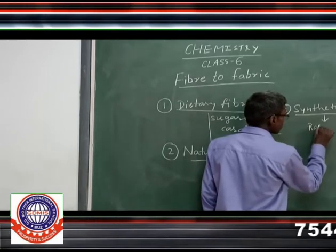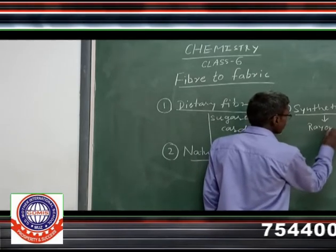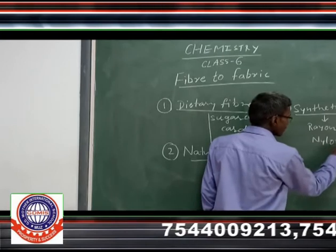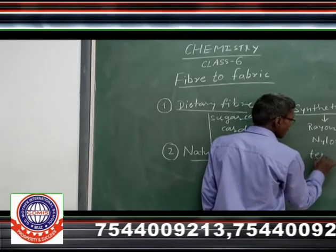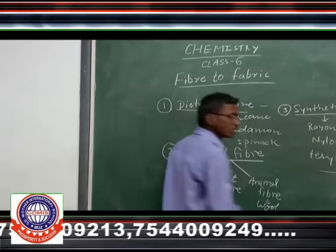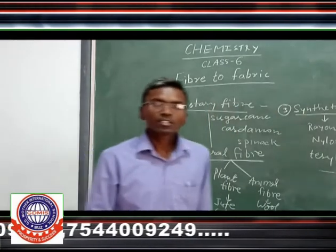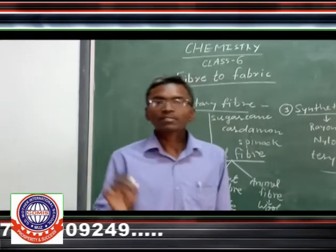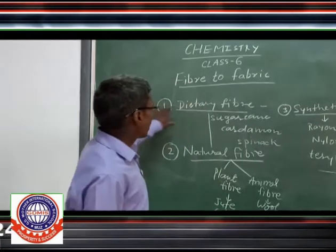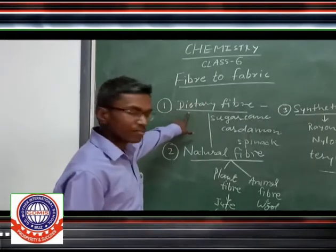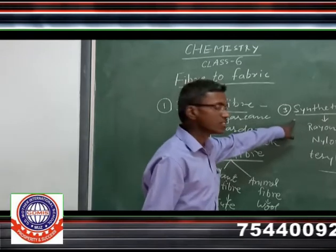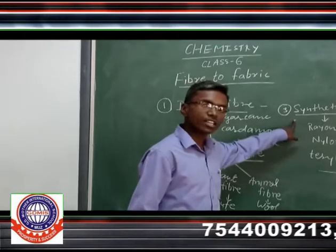Examples include rayon, nylon, and terry. So, on the basis of origin, we have classified these fibers into three groups: dietary fibers, natural fibers, and synthetic fibers.